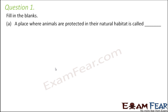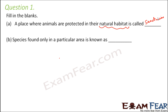Fill in the blanks: A place where animals are protected in their natural habitat is a wildlife sanctuary. Species found only in a particular area are called endemic species — they are unique to a particular location. For example, the flying squirrel and the giant squirrel of the Panchmari National Park are endemic species.